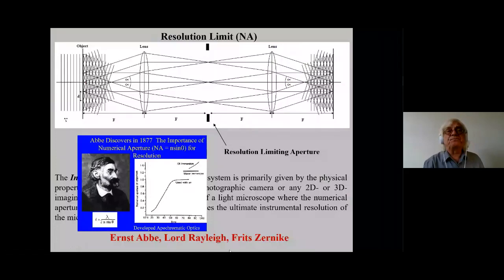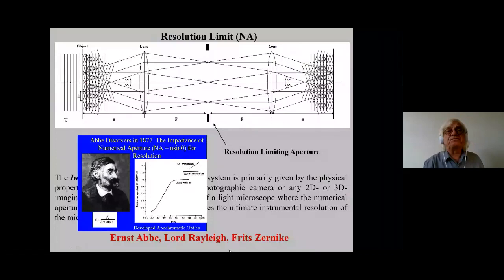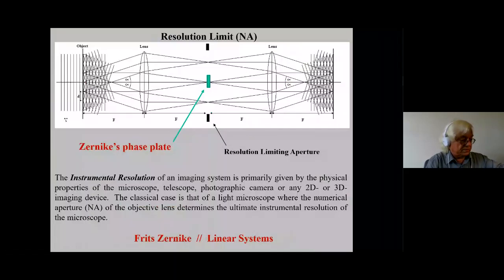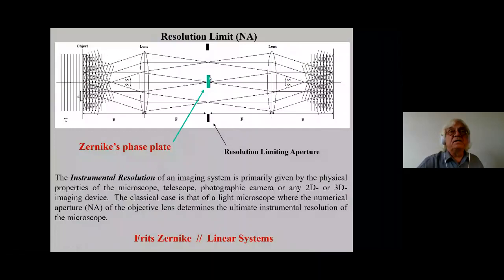Fritz Zernike is my particular hero. He had a very fundamental understanding of physics and liked to tinker with images and lenses. He understood that there's the undiffracted beam — the plane waves coming in are focused in the back focal plane. You can put a tiny piece of glass there and change the phase of this undiffracted wave with respect to the ones that have seriously interacted with the object. By doing this, suddenly you can make a transparent object — a phase object — become an amplitude object that you can see in black and white.